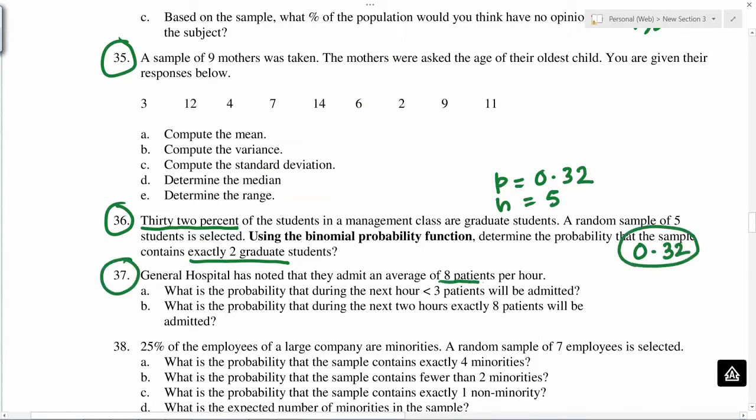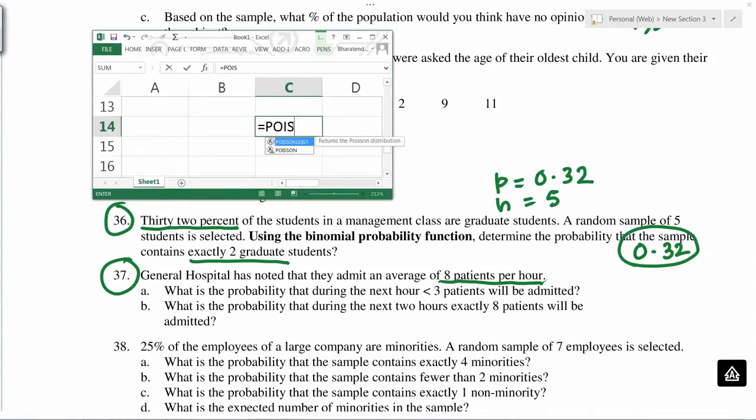8 patients per hour, so this is Poisson distribution. What is the probability that during next hour, less than 3 patients will be admitted? Equals Poisson.